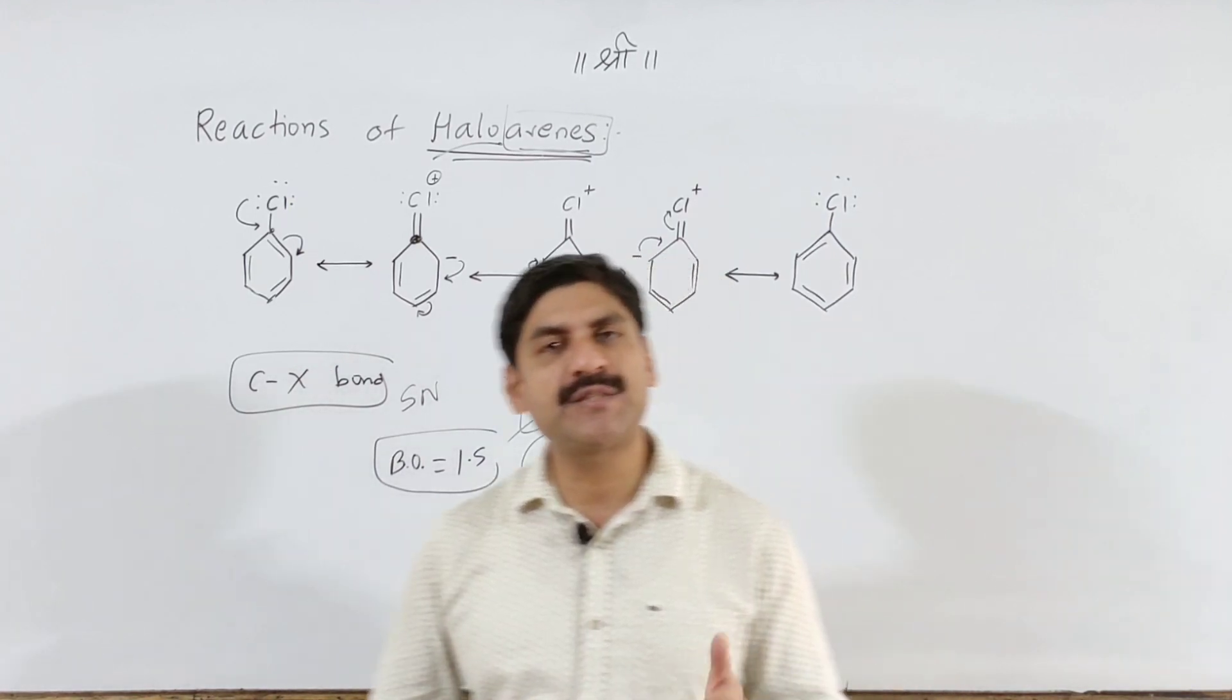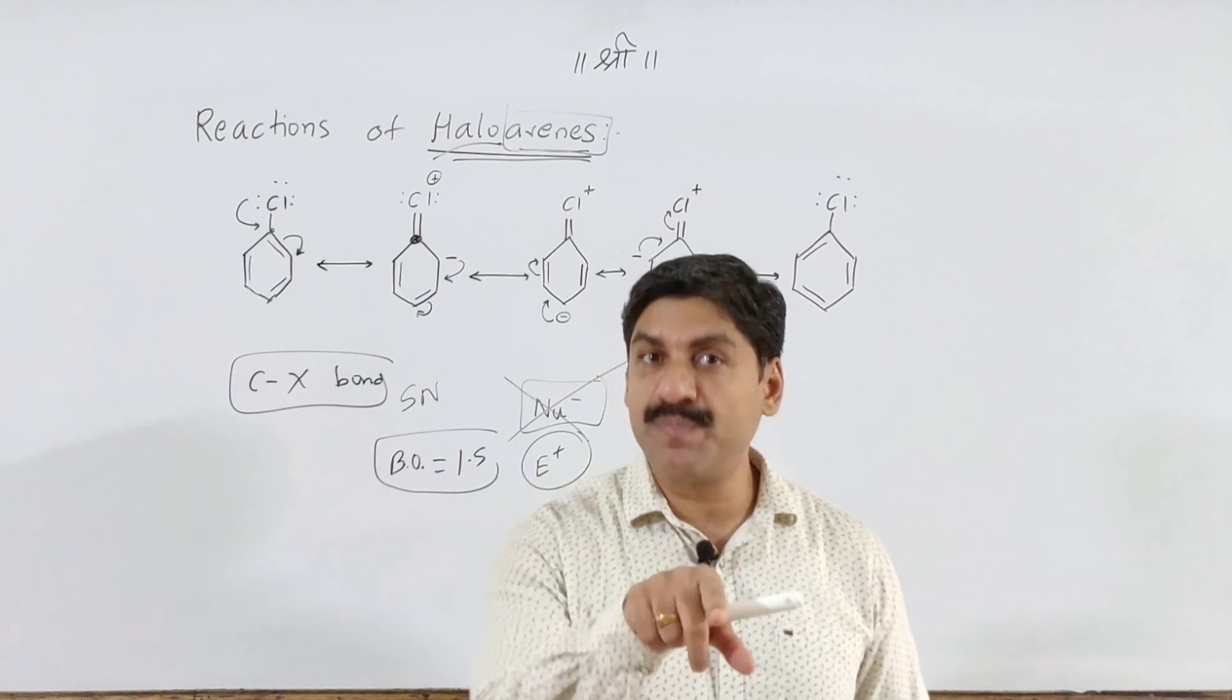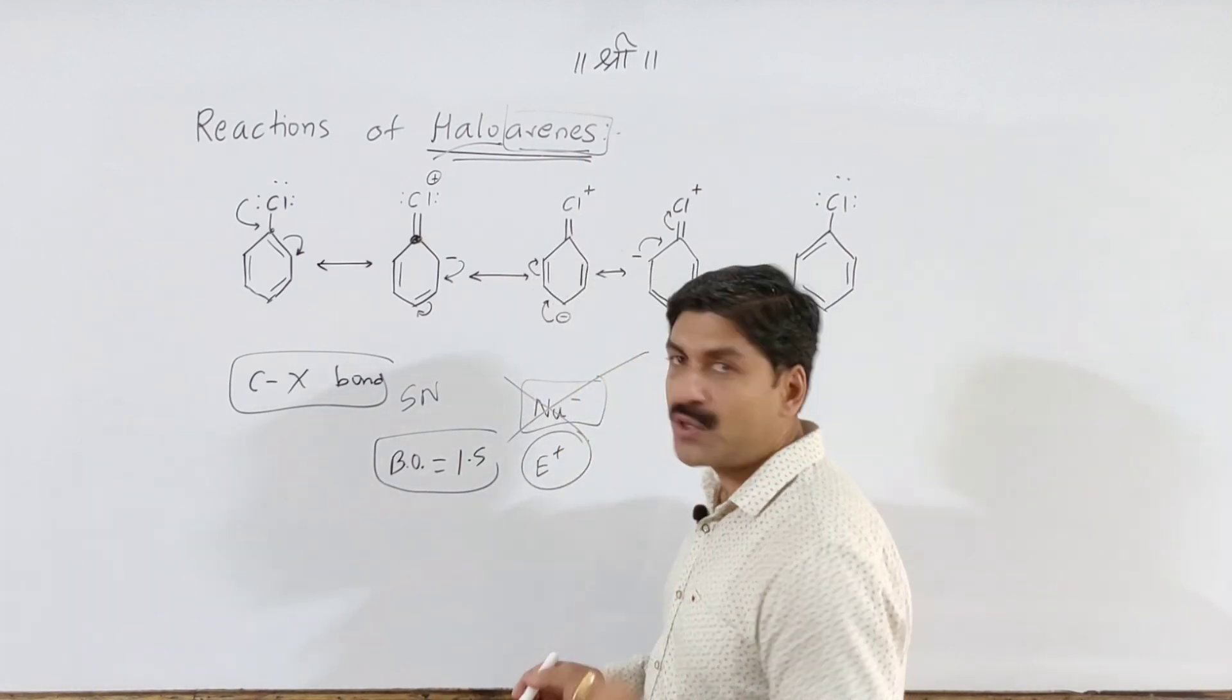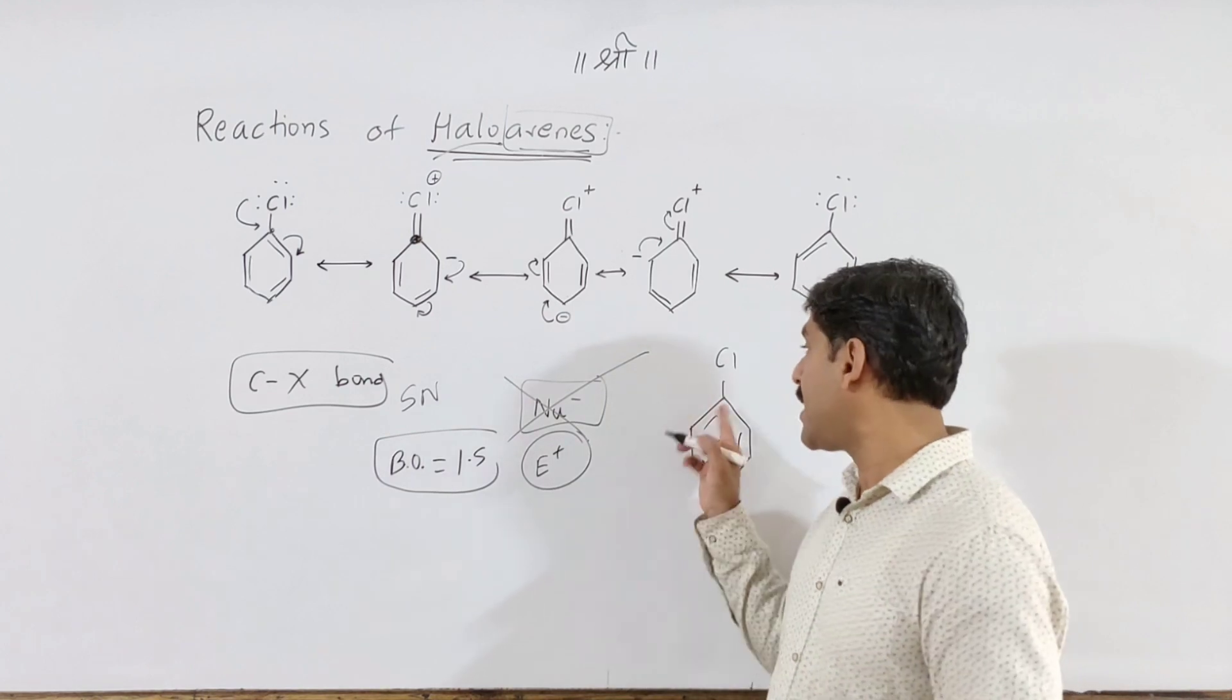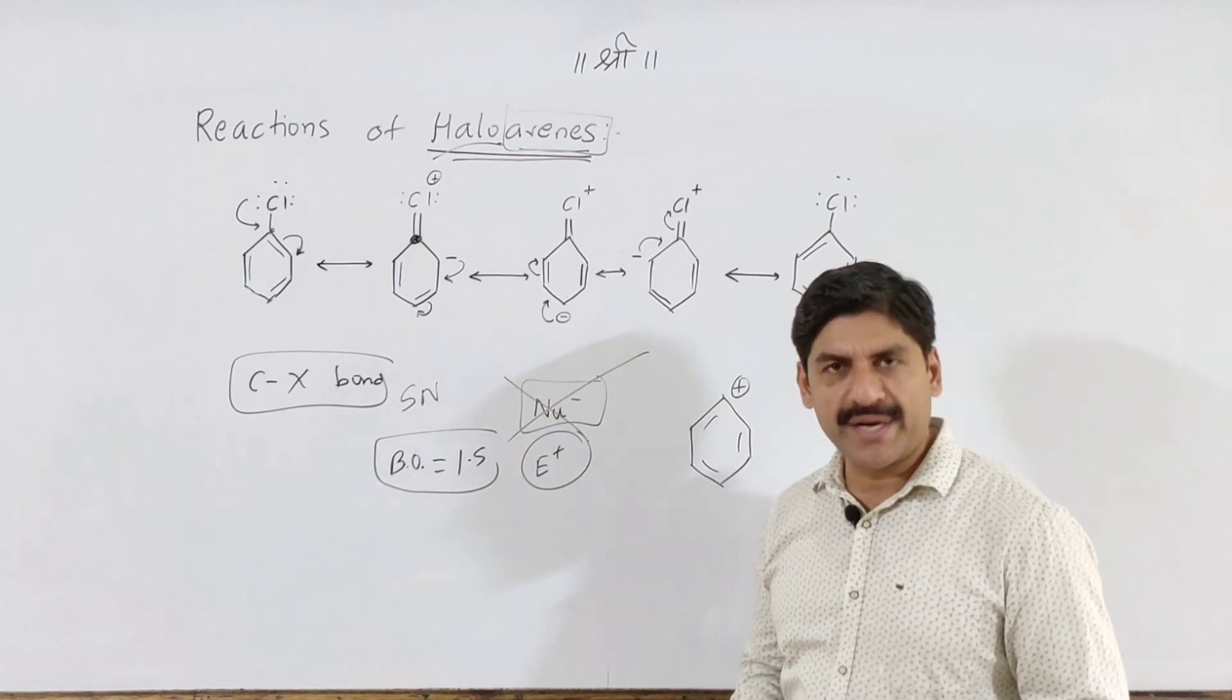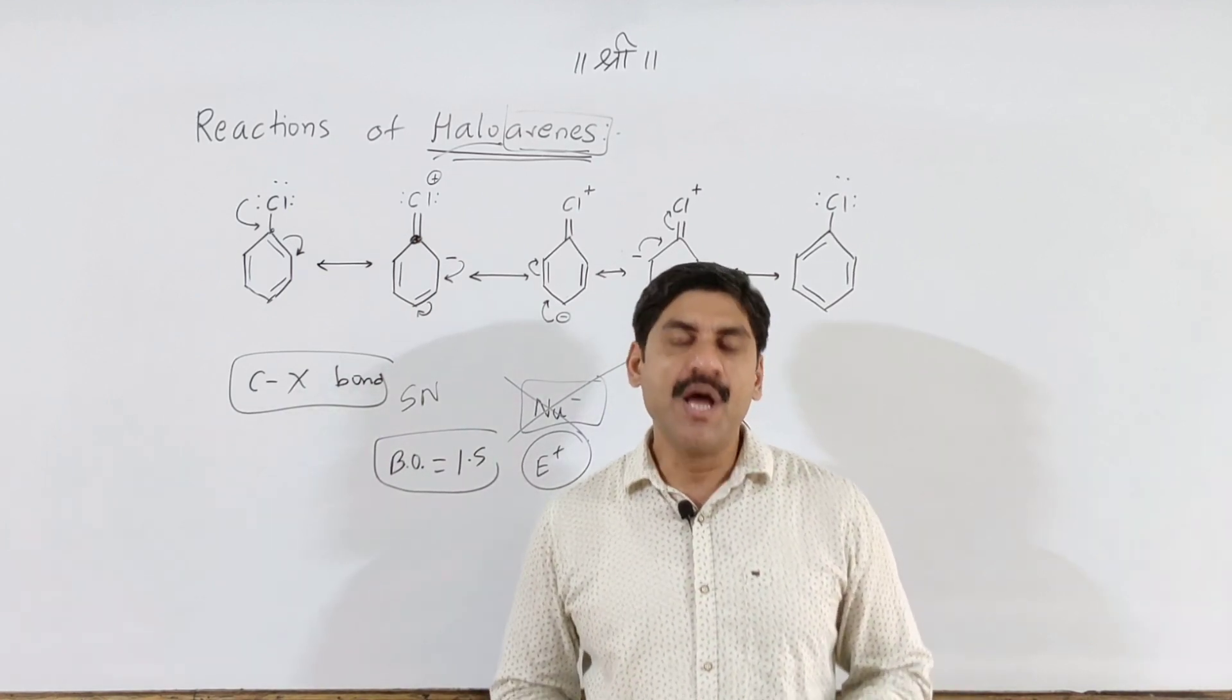Another reason is hybridization. Due to the double bond in benzene, carbon is sp2 hybridized. With sp2 hybridization, electron negativity is higher. Let me revise: single bond means sp3 hybridization, double bond means sp2, triple bond means sp hybridization. In sp2 hybridization, the carbon-halogen bond is very stable and nucleophilic substitution is not possible.